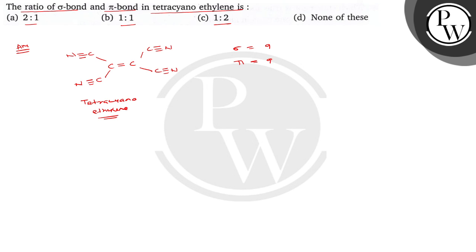So, if you find out the ratio of sigma bond and pi bond, it is 9 divided by 9 and the ratio is 1 is to 1. So, the sigma bond and pi bond in tetracyanoethylene is 1 is to 1. The correct option is B. I hope you understood well. Best of luck.